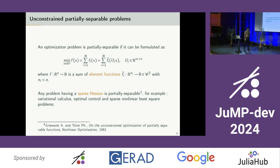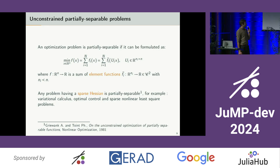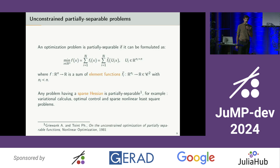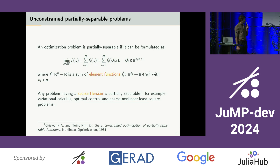So first, what is a partially separable problem? It is a problem that can be formulated as a sum of element functions fi, and the particularity of element functions is that they depend only on a small subset of decision variables instead of all the decision variables. And this subset of variables is selected by the linear operator Ui. Partial separability occurs in a lot of large-scale optimization problems, and in fact any problem having a sparse Hessian is partially separable.